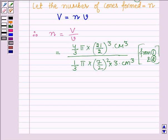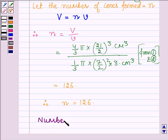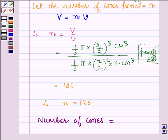Simplifying this, we get 126. Therefore, n is equal to 126. Hence, our answer is the number of cones which are formed when a solid metallic sphere of diameter 21 cm is melted and recast is equal to 126.